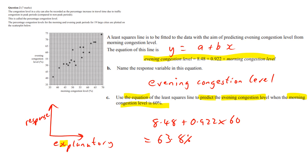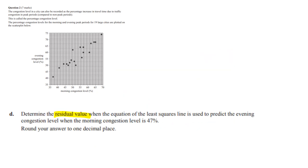A lot of people lost the mark for that. Now we've got to get the residual value, and we've got to predict the evening congestion level when the morning congestion level is 47. We've got to remember that residual equals the actual minus predicted.